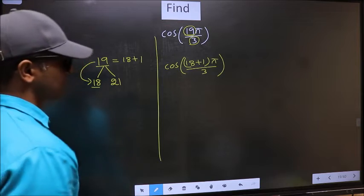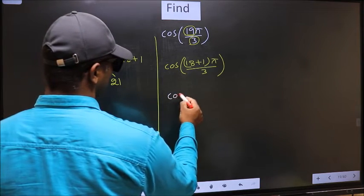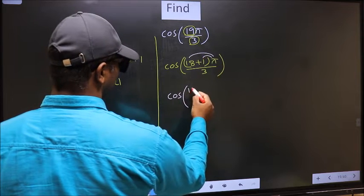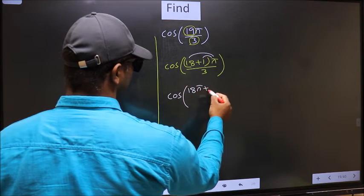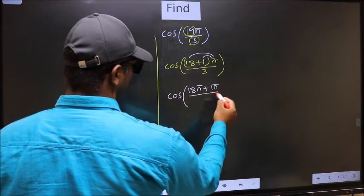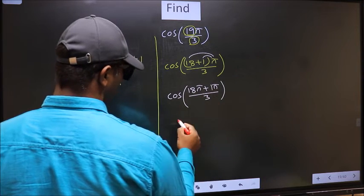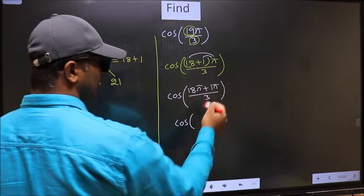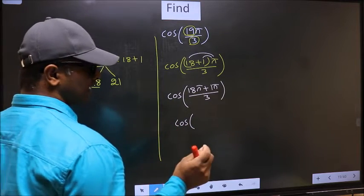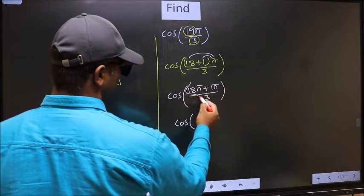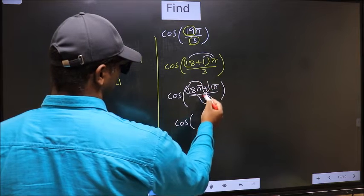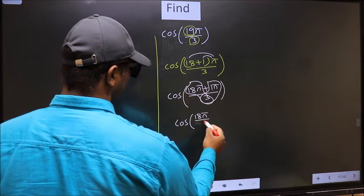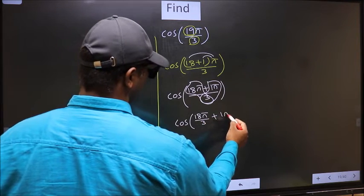Next, cos. Now you should open the brackets. You get 18π plus 1π by 3. Now cos. Over here, you should split the denominator in this way. That is 18π by 3 plus 1π by 3.